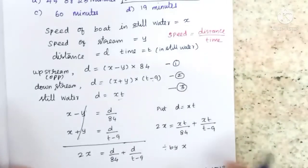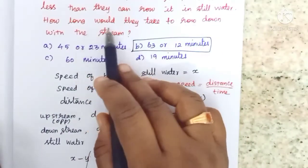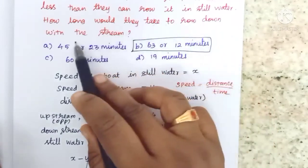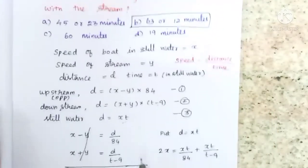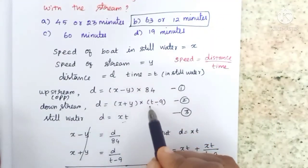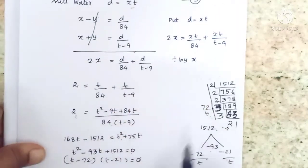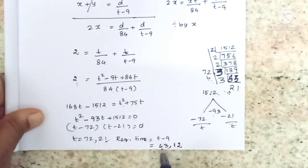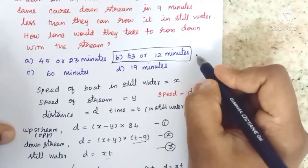The question asks for downstream time. How long would they take to row down with the stream? Downstream time is t minus 9. 72 minus 9 is 63, and 21 minus 9 is 12. So the answer is 63 or 12, option B.